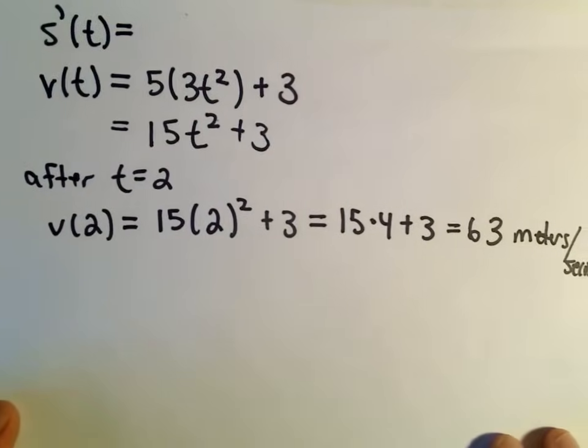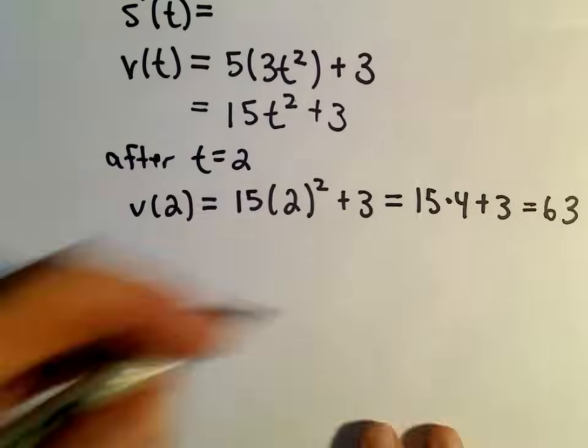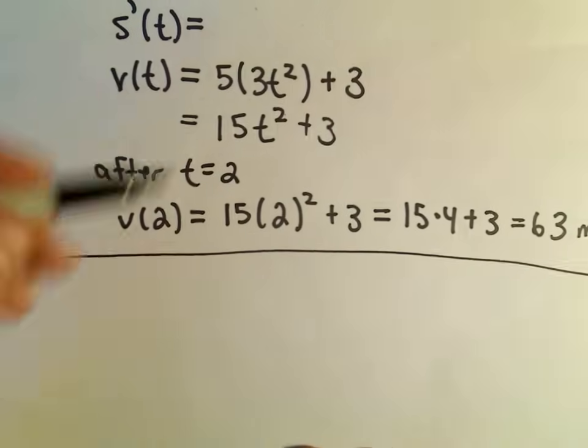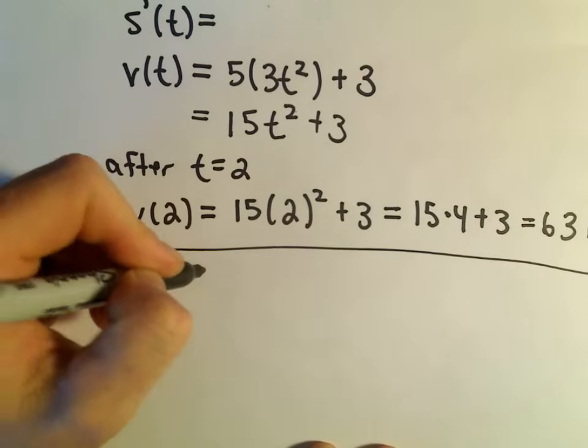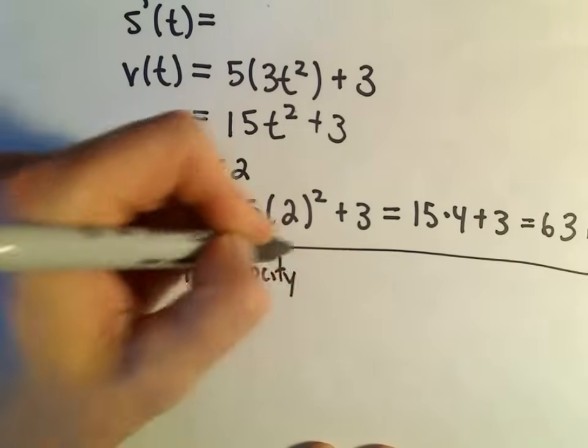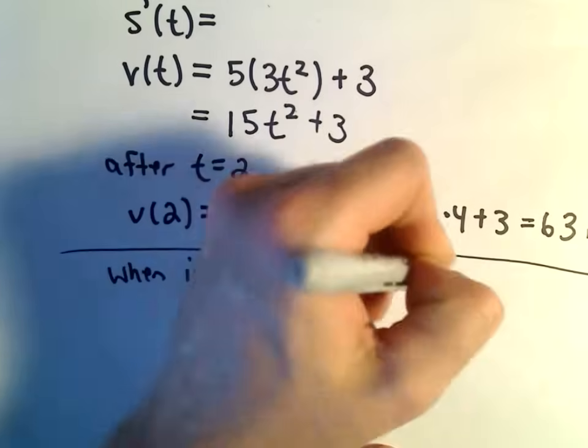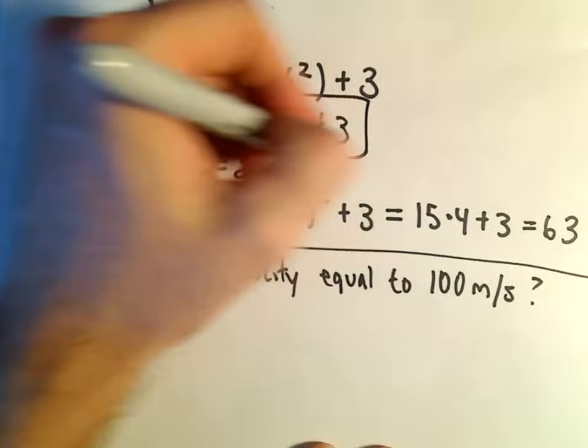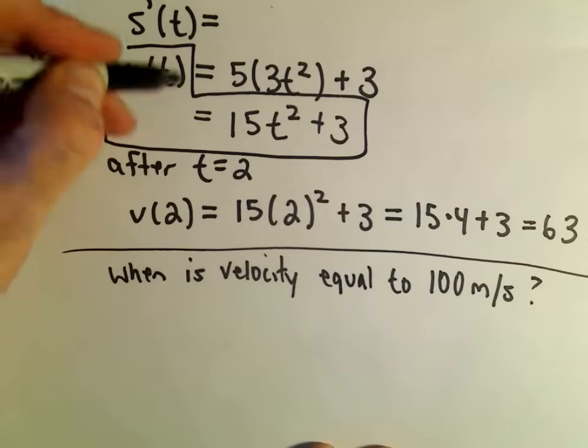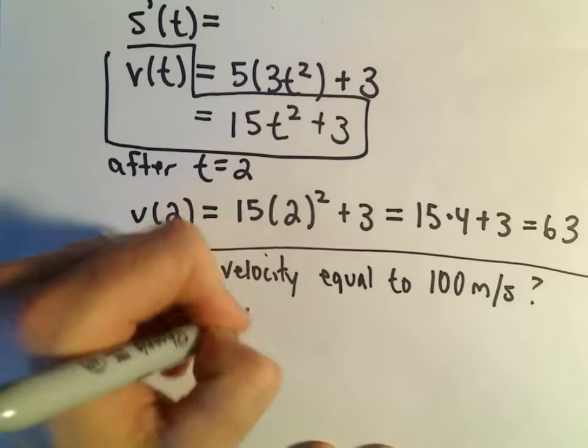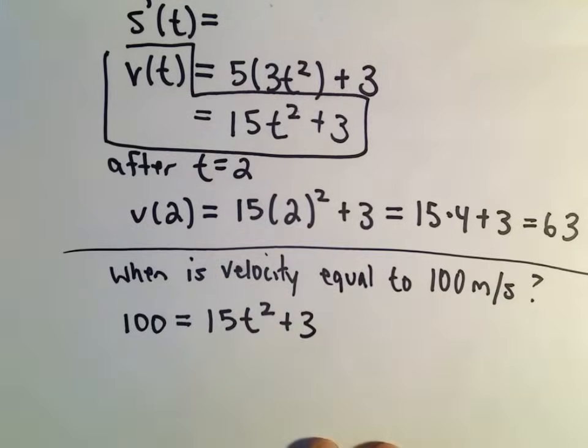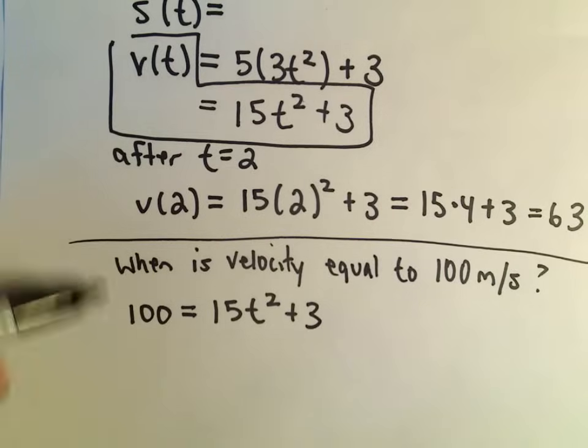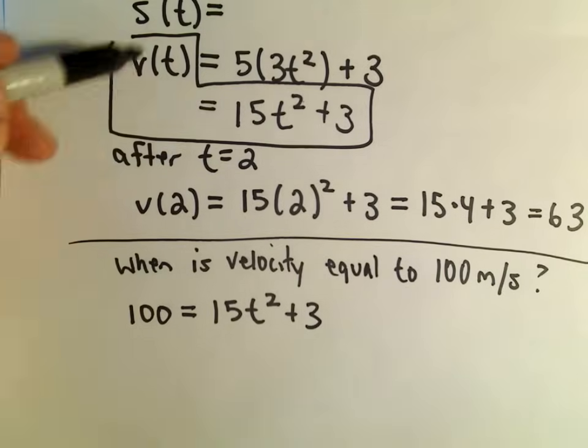So nothing tricky, nothing crazy, other than taking a derivative and plugging in T equals 2. They could ask something like, when does your velocity equal 100 meters per second? So just to throw in something different, when is your velocity equal to 100 meters per second? Well, in that case, you would just take your velocity equation, and now we're trying to figure out when our velocity is 100. We would just plug 100 in on the left side, and then you would simply have to solve for T. So you could subtract 3, divide by 15, take square roots, and do all that. So, I'm not going to go through it, but that's the difference. You would just plug it in and then have to solve.